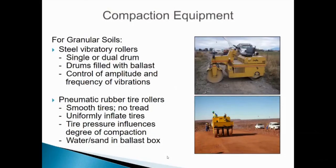For compaction equipment, granular soils use either steel vibratory rollers or pneumatic rubber tire rollers. Steel vibratory rollers can be single or dual drum; drums can be filled with ballast to increase weight, and the contractor controls amplitude and frequency of vibration. Pneumatic rubber tire rollers need smooth tires with no tread, uniformly inflated, and weight can be adjusted by adding water or sand to the ballast box. These granular soil rollers achieve compaction through sheer weight, densification, and vibration.